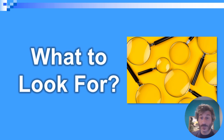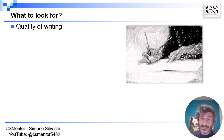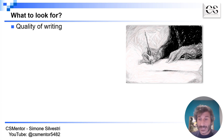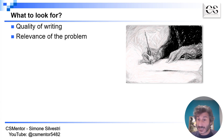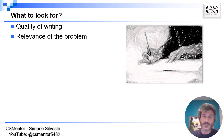Let's now discuss what to look for while reviewing a paper in order to complete the review form. The first thing to assess is the quality of writing — how well the paper is written, how clear it is, how easy it is to follow. Then assess how relevant the problem is: is this a current problem, are there many researchers working on it, is it a new problem, or maybe an old problem that has been solved many times before?